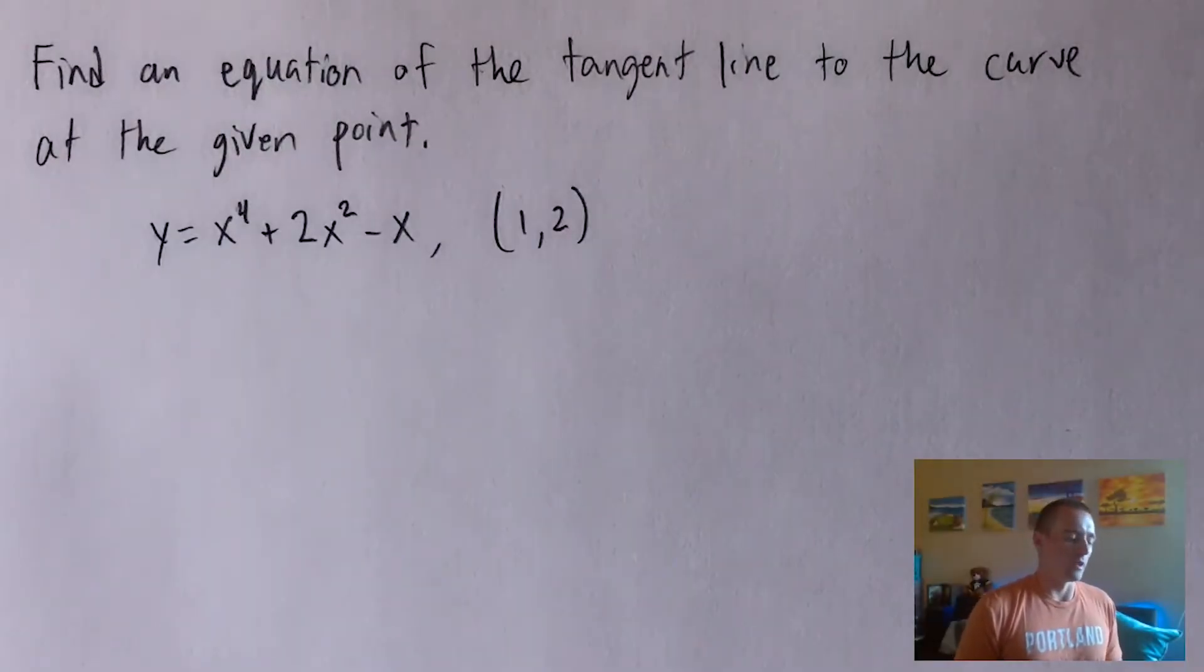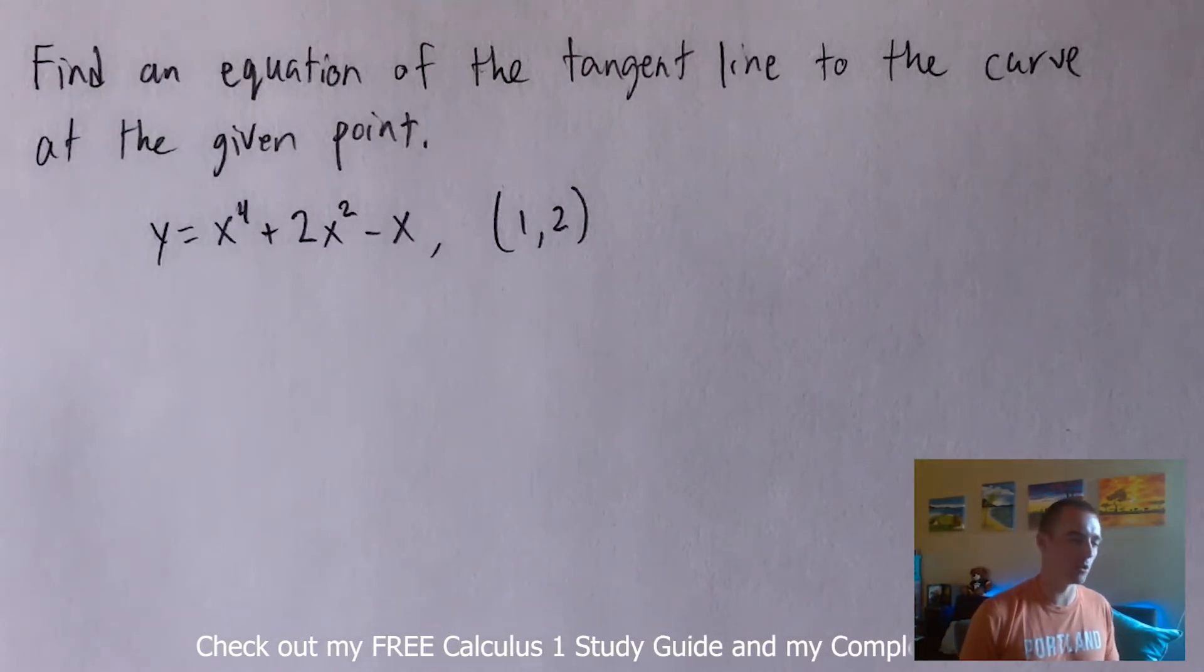So here's the problem we're going to be going over today. We're going to find an equation of the tangent line to the curve at the given point. The curve that we're looking at is y equals x to the fourth plus 2x squared minus x and the given point is 1, 2.